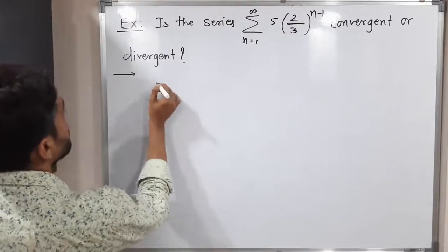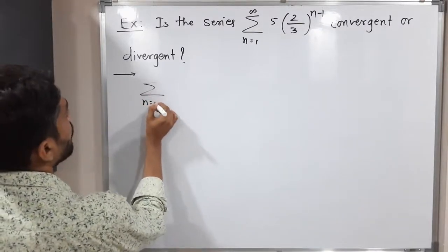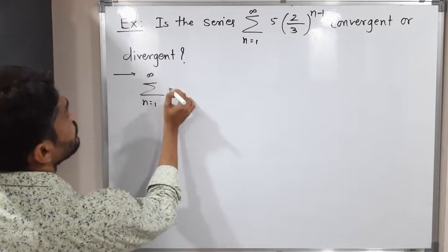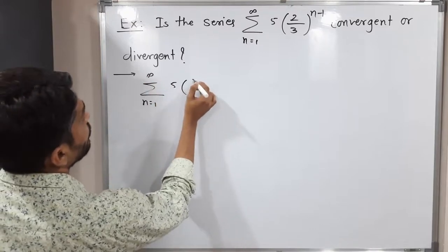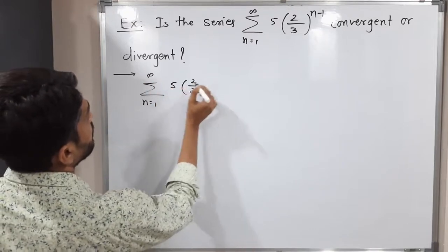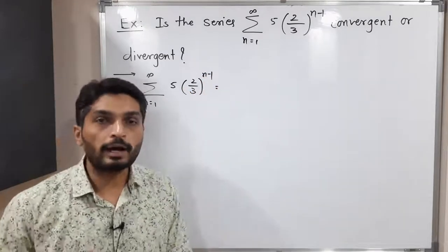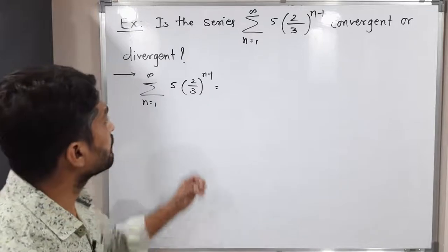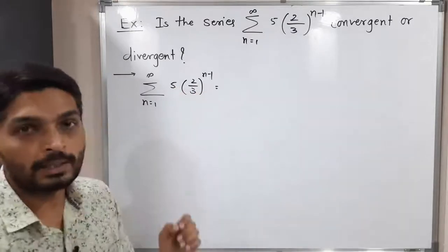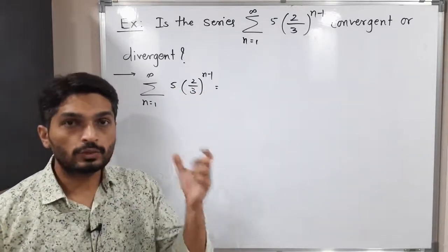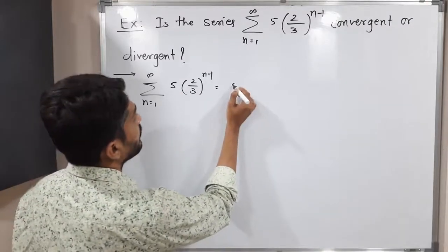So let us consider summation n running from 1 to infinity. So 5, 2 by 3 raised to n minus 1. So what will I do? I will put two values of n. If I put n is equal to 1, this bracket raised to 1 minus 1, that means 0. So that term raised to 0, that means 1. So we'll have 5 only.